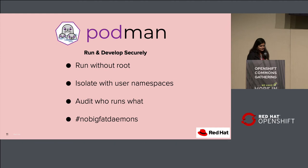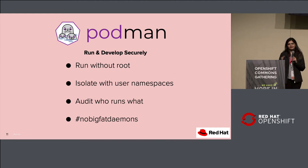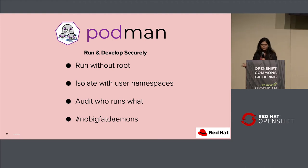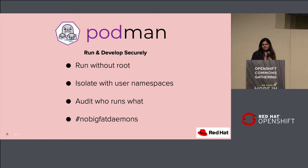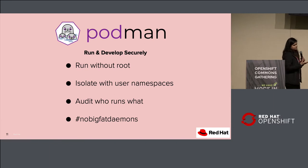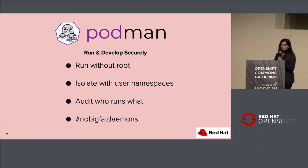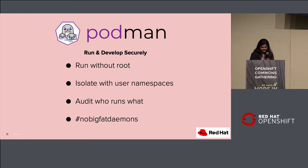With Podman you can define different UID ranges for different containers, adding another layer of isolation not only between your container and host, but also between multiple containers. For example, one container runs as 100,000 on the host and another as 200,000. If a process from container A breaks out and tries to attack container B, it won't be able to because they run with different permissions — a more secure container workload.